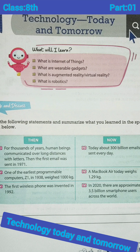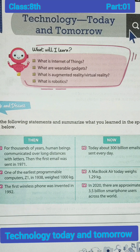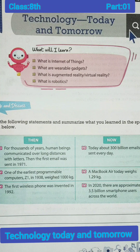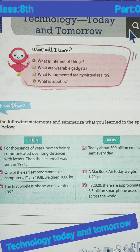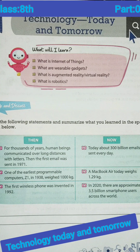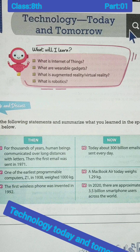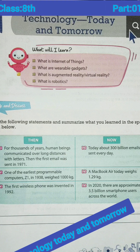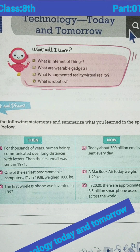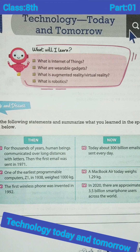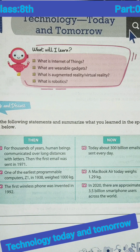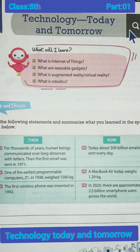Next they give a section called Think and Discuss: Read the following statement and summarize what you learned in the space given below. So it's Then and Now — two columns. I will read out: then, for thousands of years human beings communicated over long distances with letters. The first email was sent in 1971.